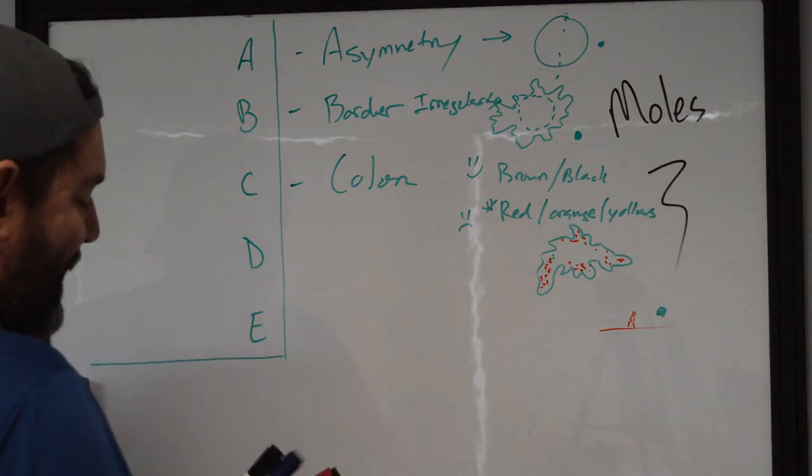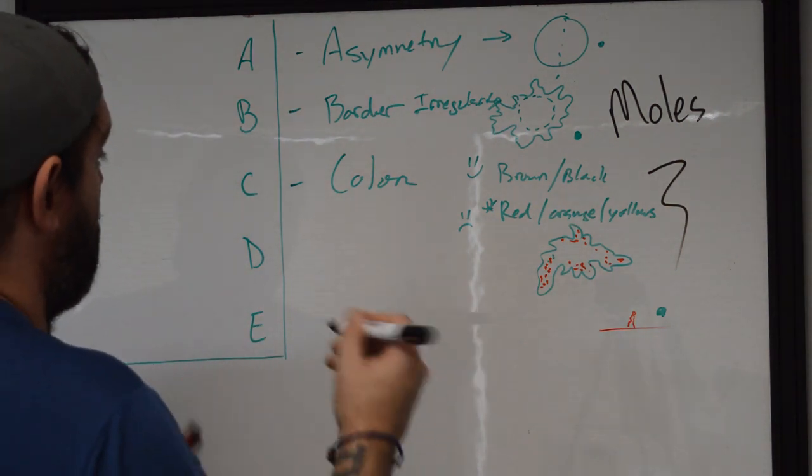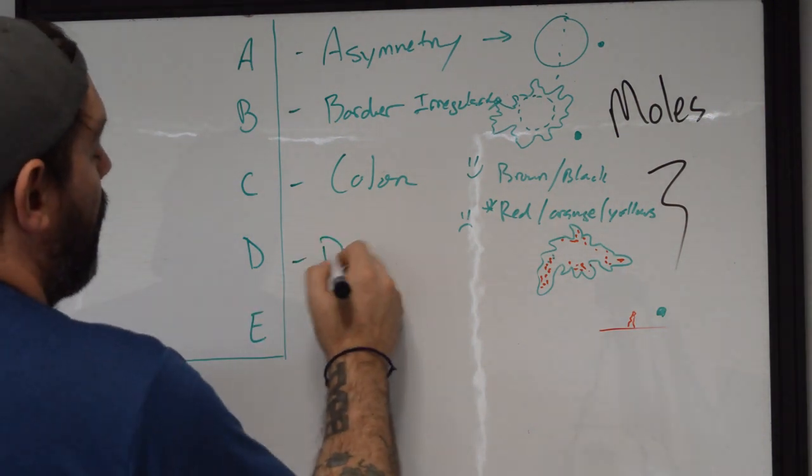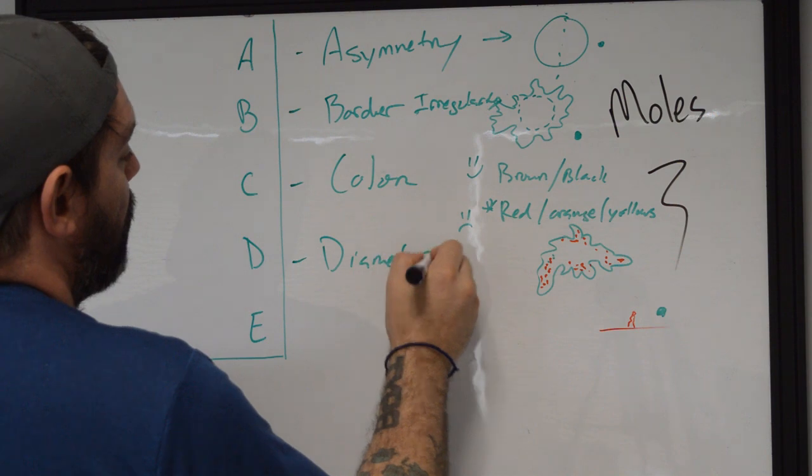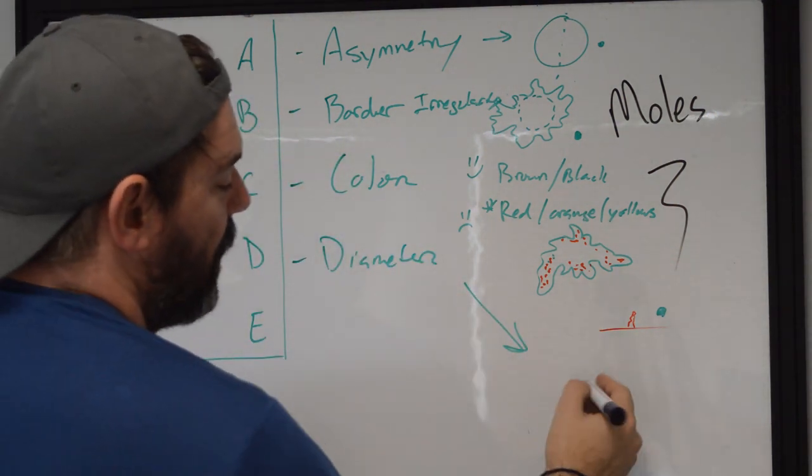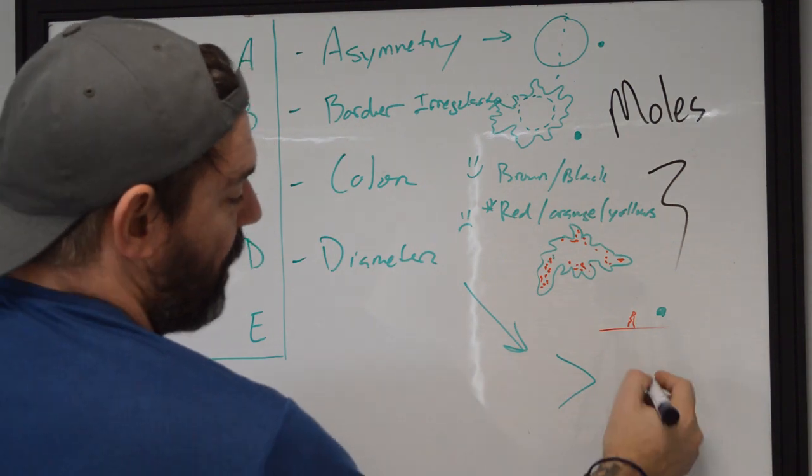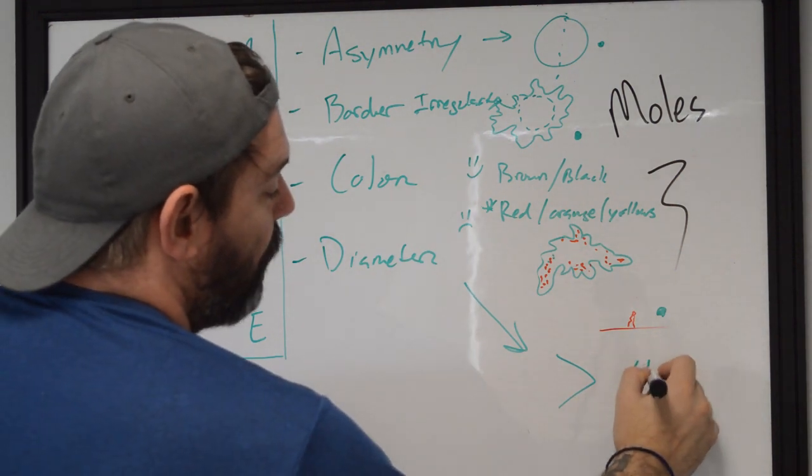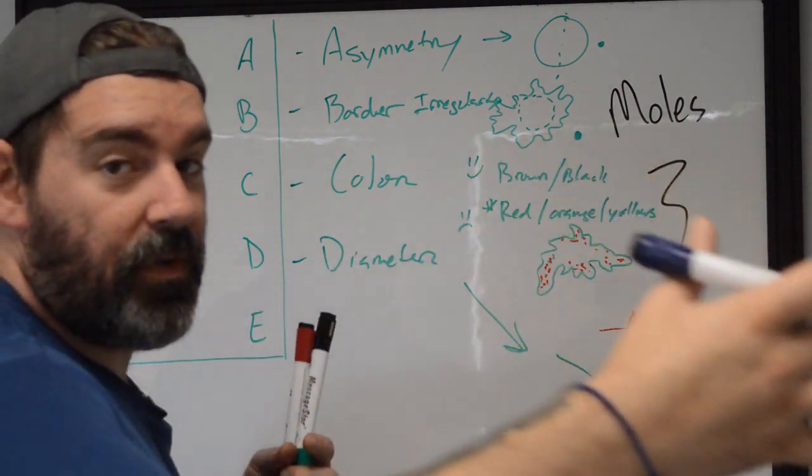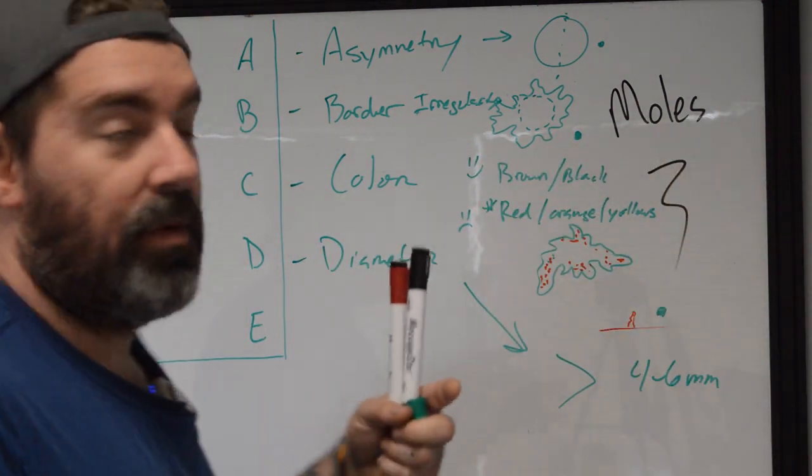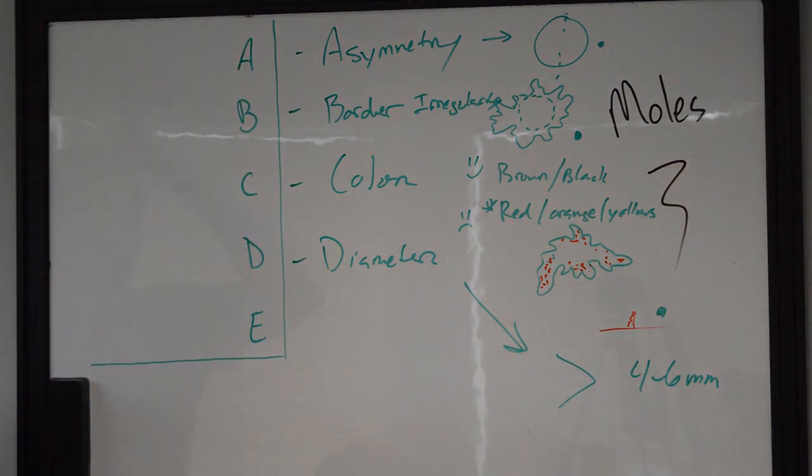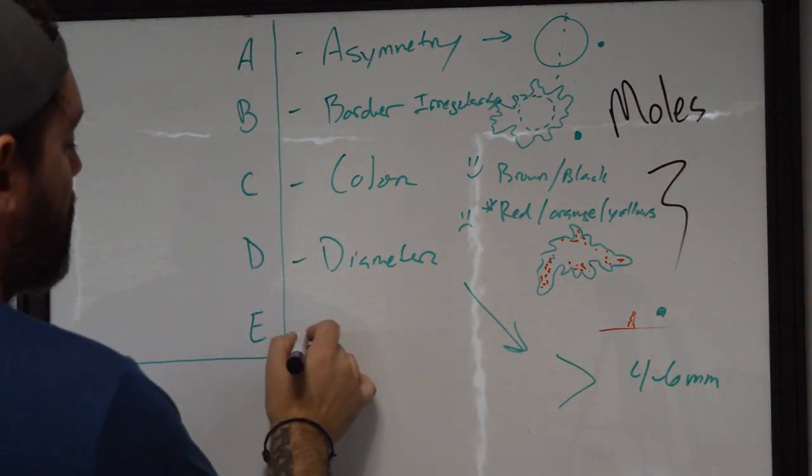The last one is diameter. I already know this, diameter. So if we see anything that is going to be on average greater than four to six millimeters in width, diameter across, then they need to probably go and have that checked out just to make sure that things are going to be monitored.